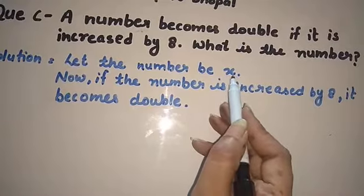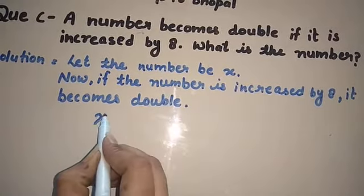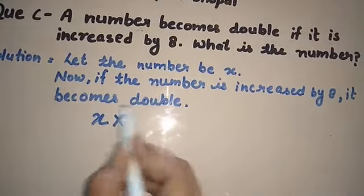So, a number becomes double if it is increased by 8. So let the number be X.